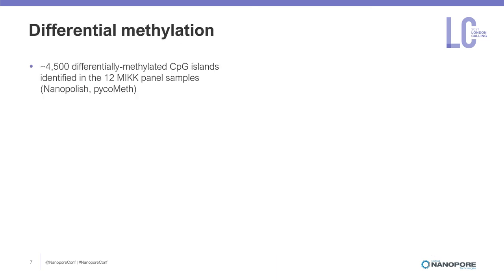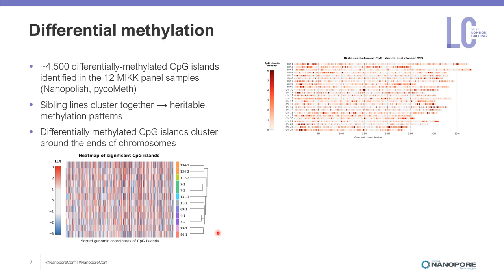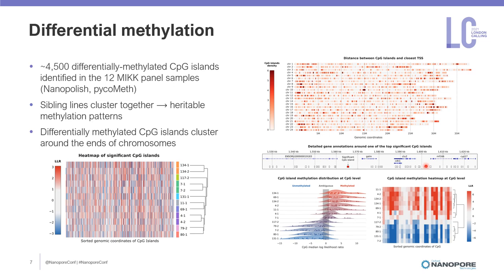Finally, we used nanopore DNA sequencing to identify around 4,500 loci that were differentially methylated across the 12 MYK panel samples. We found that the differentially methylated CpG loci clustered by sibling lines, showing that the methylation patterns are heritable across multiple generations. We also found that they were enriched at the ends of the chromosomes, and here we show an example of one of the most differentially methylated CpG loci, with a clear split in methylation levels at that locus across the 12 samples. We intend to soon identify more MQTLs across the entire panel.